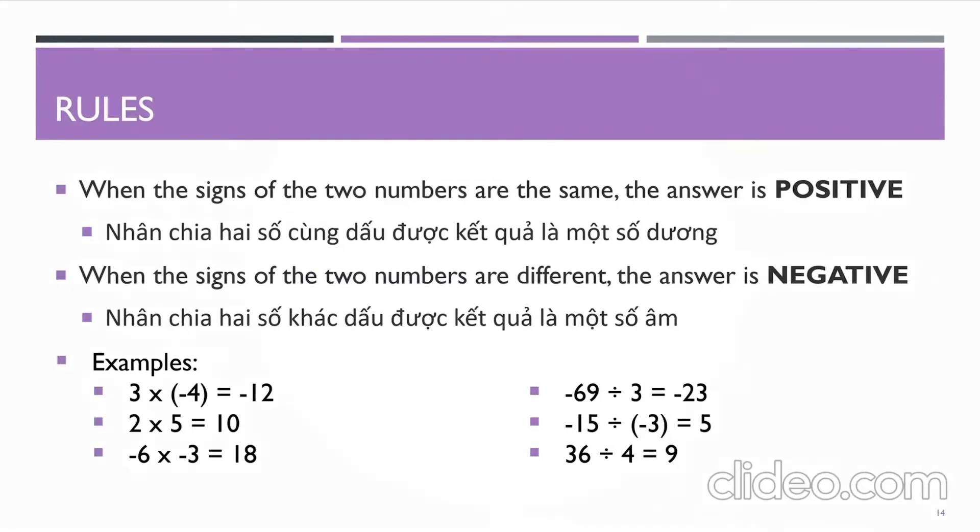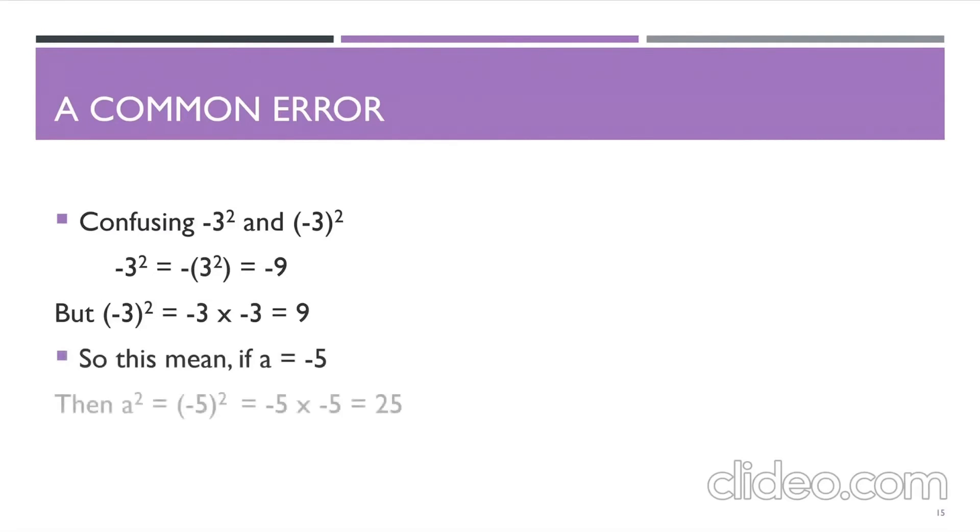But that's a big problem while doing multiplication and division. You might confuse negative 3 squared and negative 3 squared with brackets. They give out different numbers. One result is negative and the other one is positive. So if you have a as minus 5, then a squared is 25, not minus 25. So please be careful while doing the power things.